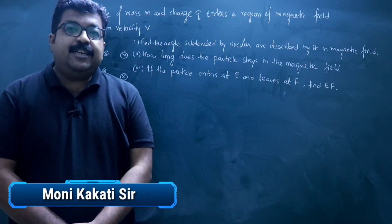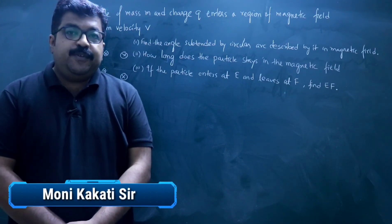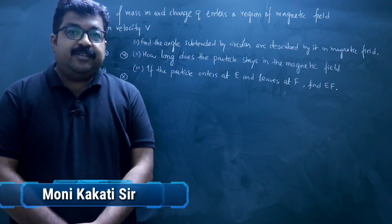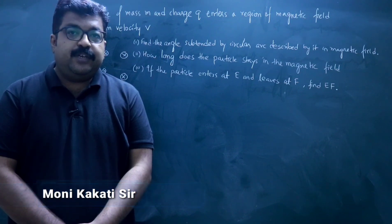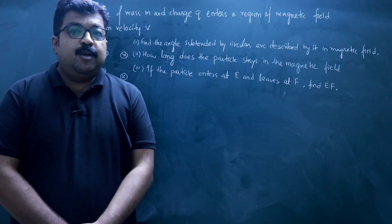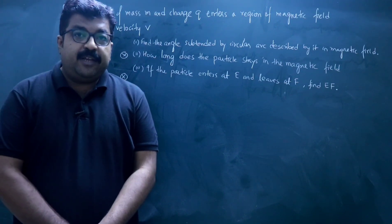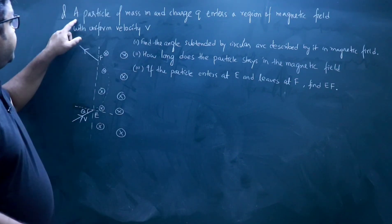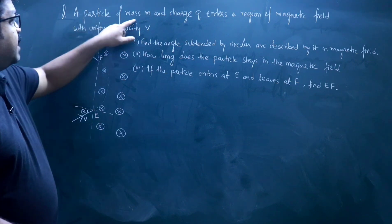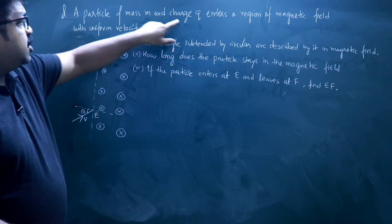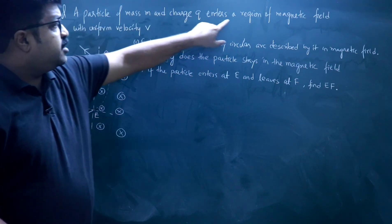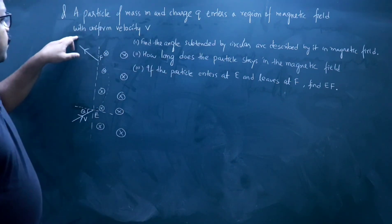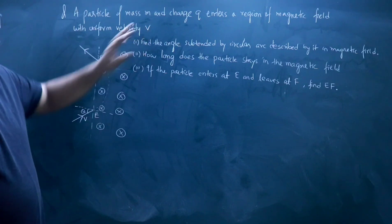Hello everyone, welcome to my channel. In this video we are going to solve a very interesting question of a charged particle moving in a magnetic field. In this question we have a particle of mass M, charge Q entering a region of magnetic field with uniform velocity V.